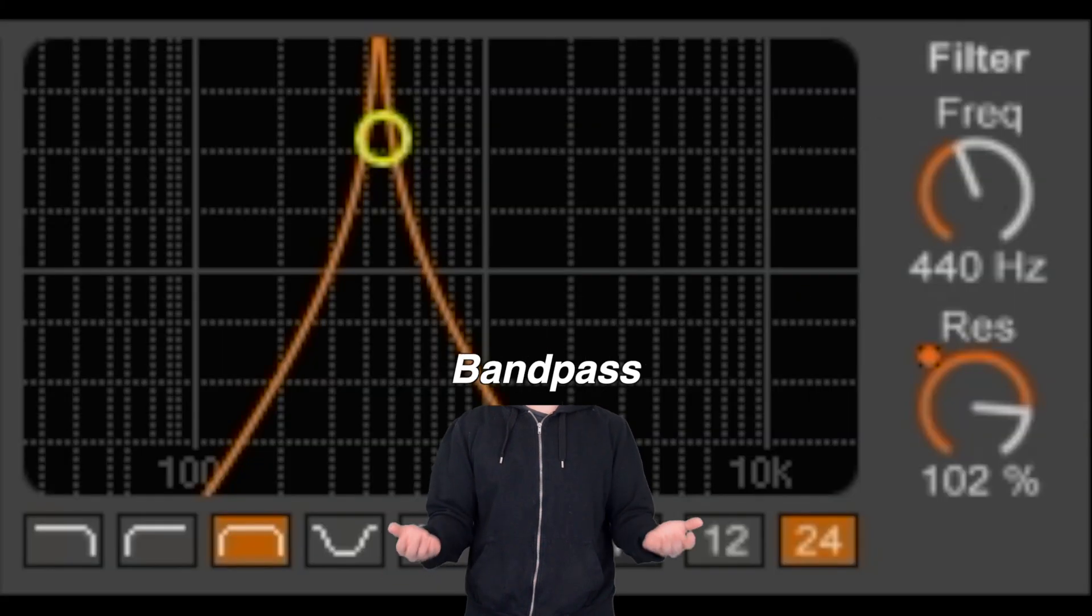The third type of filter that we can use is bandpass filter. It allows certain range of frequencies to go through and filters out everything else. When you set the cutoff frequency as 440Hz as an example, frequencies that are below and above are filtered out.